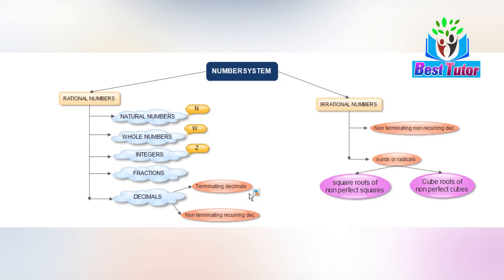So all terminating decimals are rational numbers. Similarly, all non-terminating recurring decimals can be expressed in the form of a fraction; therefore, all non-terminating recurring decimals also belong to the set of rational numbers.